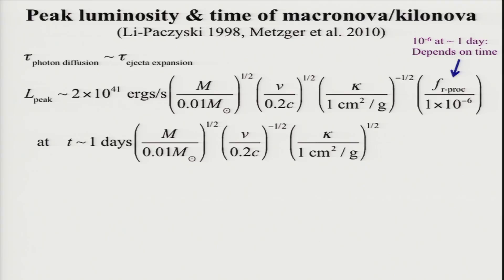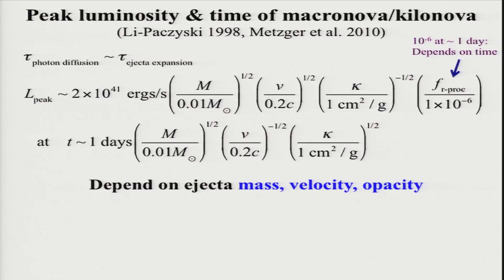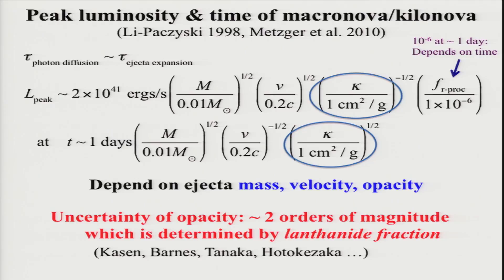As I said, there are three important parameters: mass, velocity, and kappa. Among them, the most uncertain parameter is kappa, because the mass is at most in the range between 10^-3 to 10^-2 solar mass, and velocity is roughly 0.1 times the speed of light. But kappa could be in a huge range — it could change by two orders of magnitude. This kappa is determined by the lanthanoid fraction, and because the lanthanoid fraction is very uncertain, kappa could change by two orders of magnitude.